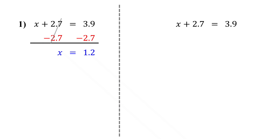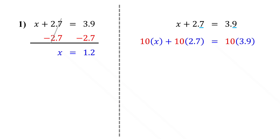First, check how many digits are after the decimal point in each number. Here, both 2.7 and 3.9 have just one digit after the decimal point. That means we multiply every term in the equation by 10, which moves the decimal point one place to the right and removes it. Remember, even though our goal is to eliminate the decimals, we still need to multiply every term, including the variable, to keep the equation balanced. So don't forget — everything gets multiplied.